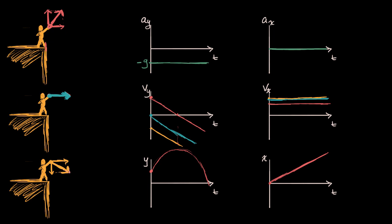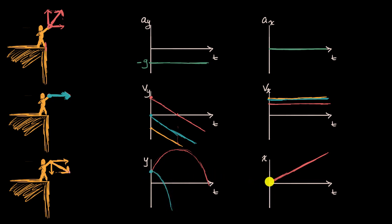For the blue scenario, we start in the exact same place as the pink scenario. The initial y velocity is zero, and then it gets more and more negative, so the y position curves downward from the start. The x position had a slightly higher constant velocity, so it increases at a constant rate with a slightly steeper slope than the pink scenario.